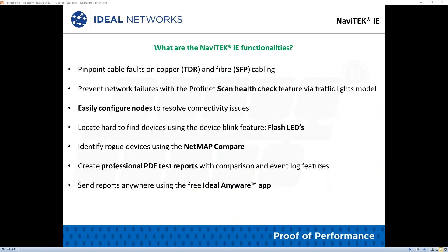Here is our agenda — the Navitech IE functionalities: pinpoint cable faults on copper and fiber; prevent network failures with the Profinet scan health check; easily configure nodes; locate hard-to-find devices using the Devices Blink feature and Flash Lens; identify rogue devices using the NetMap Compare; create a professional PDF test report with comparison and event log features; and send reports anywhere using the free Ideal Anywhere app.